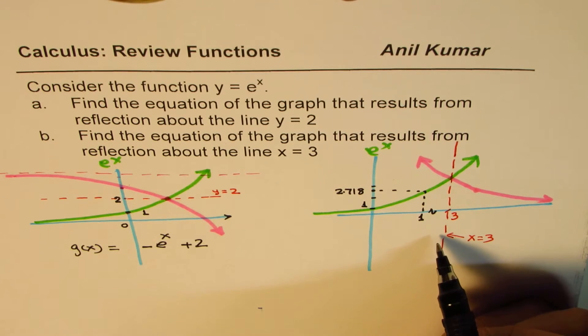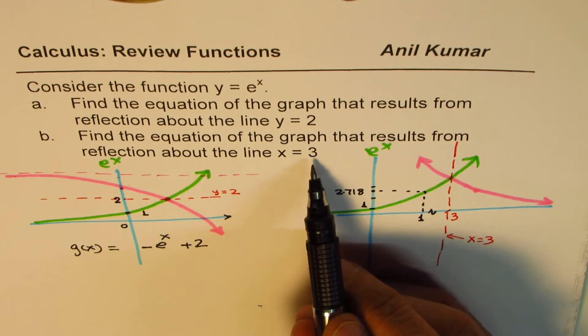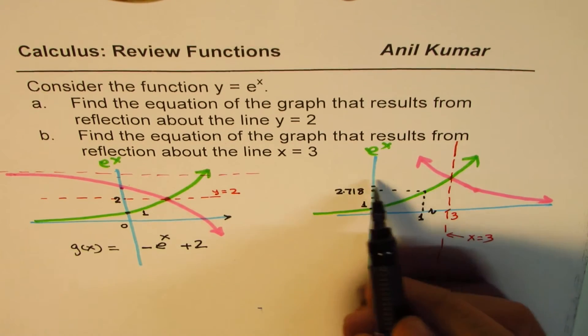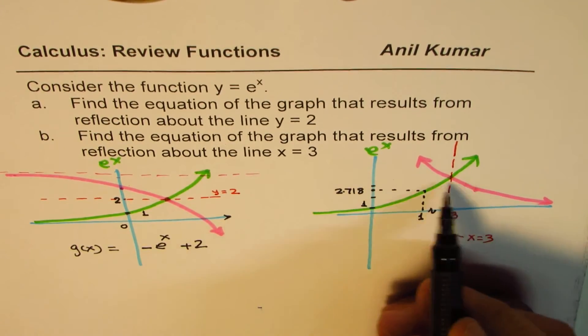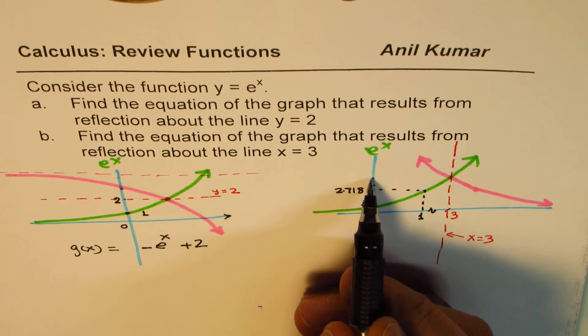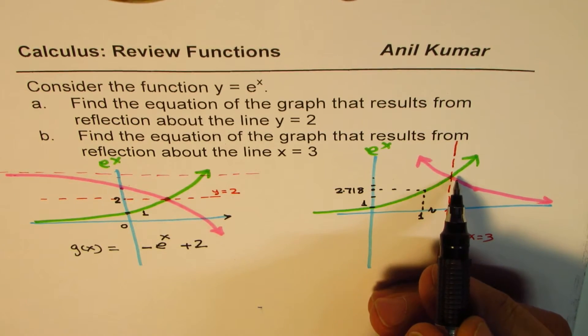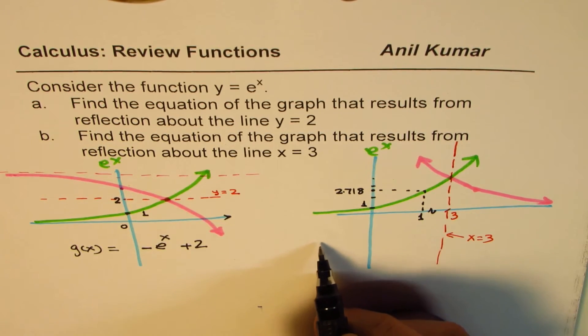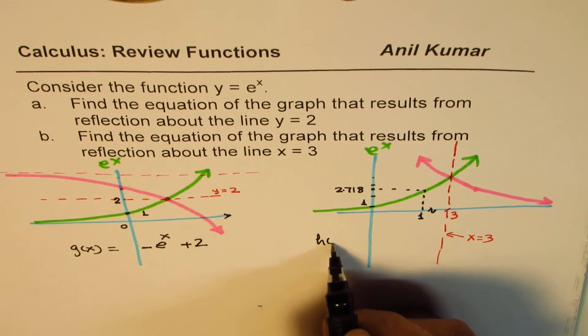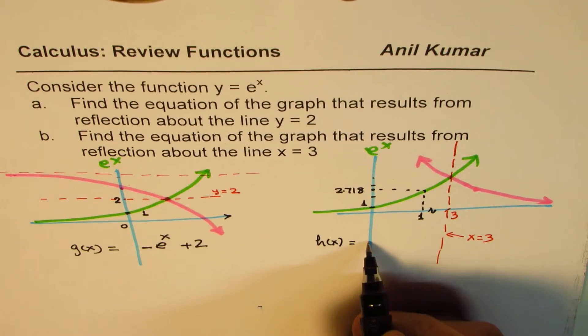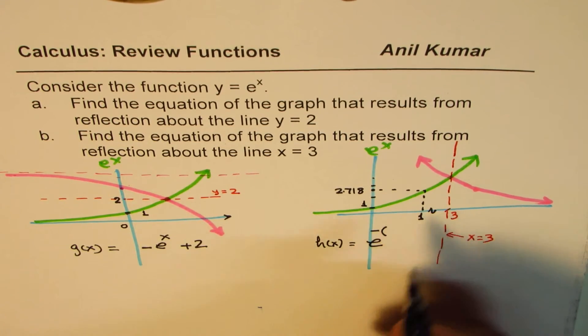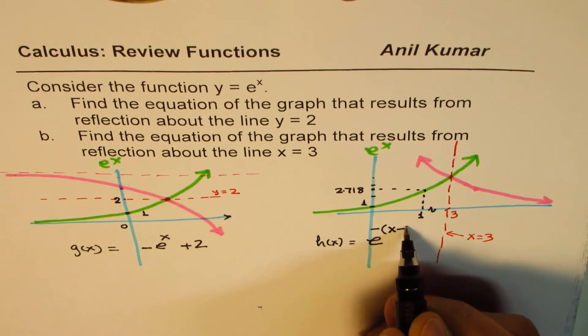Now in this particular case, the reflection is on the x-axis, and that too, about the line which is x equals 3. So that means, if we would have reflected it this place, in that case, we are translating it right by three units. And therefore, the equation of this should be, let's say, h of x equals e to the power of minus, now since we are moving right, it is three units, we'll write x minus 3.